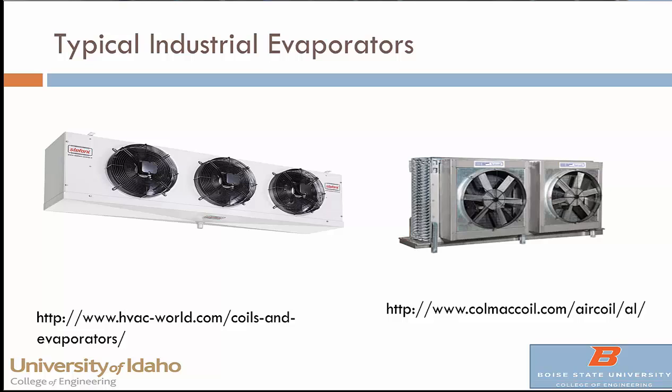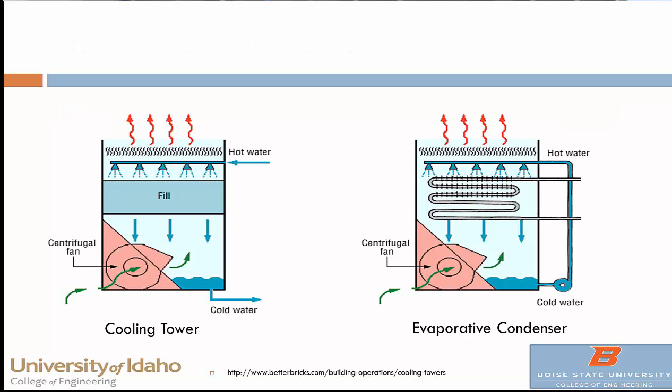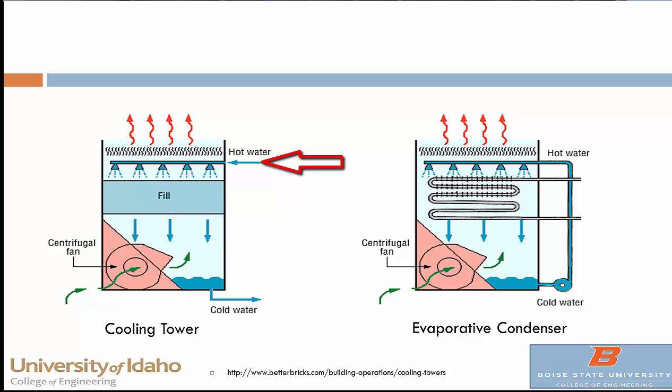In large freezer warehouses, evaporator units are mounted up high, drawing in the warmer air that has risen to the top and cooling it so it drops back down. On the other end, condensers reject heat — usually on the roof. The two most common types are the evaporative condenser and the cooling tower, which look very similar. In the evaporative condenser, water is sprayed on fins and a fan blows air against it so water evaporates and takes heat away from the refrigerant running through the condenser coil. In a cooling tower, water from the chiller runs through a medium with air blown against it, and the collected water returns to the chiller.